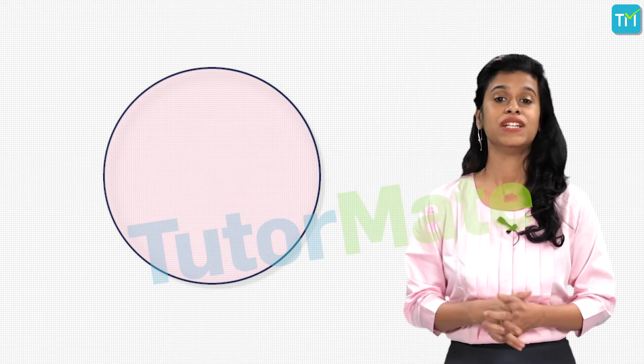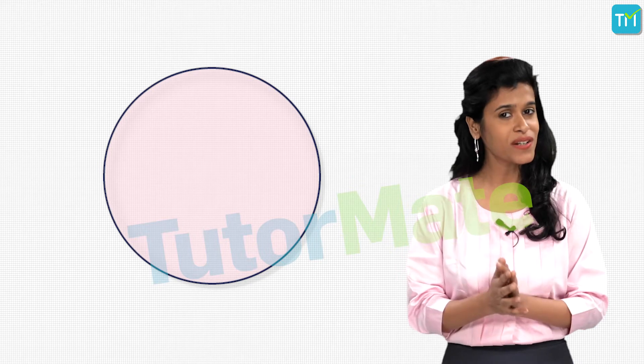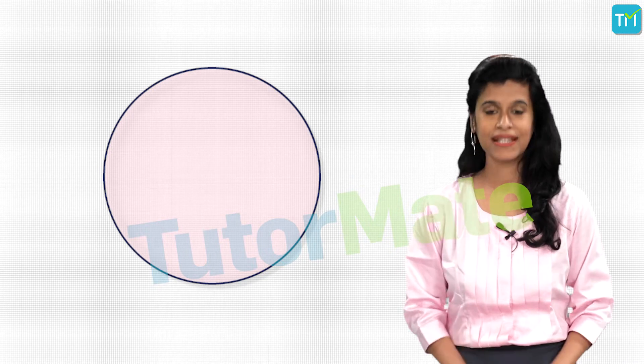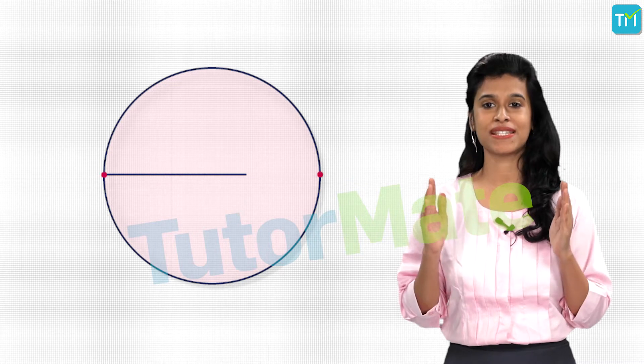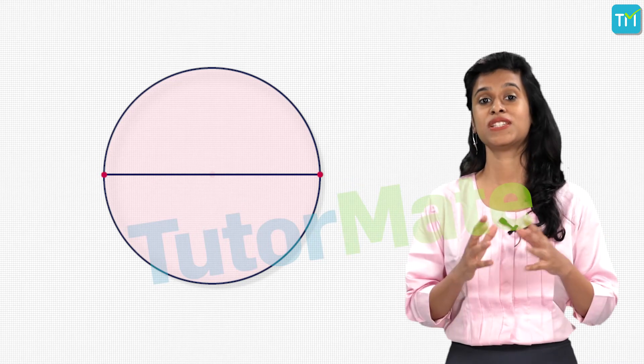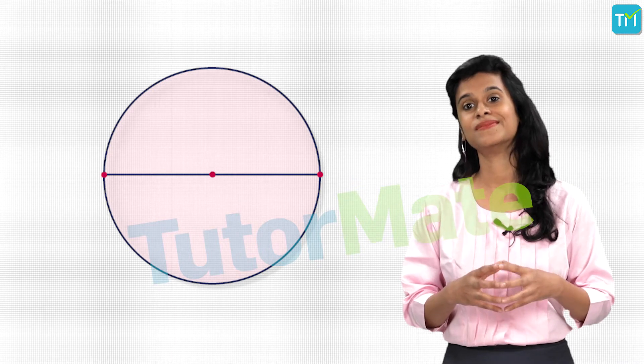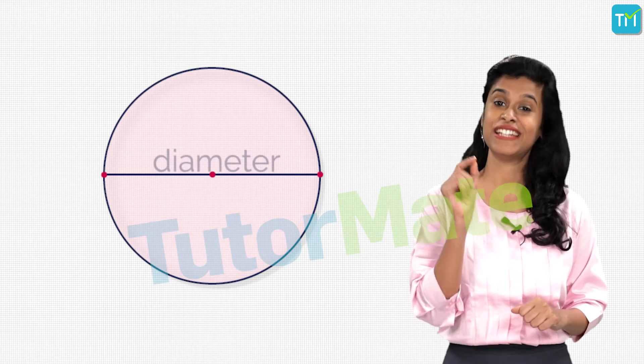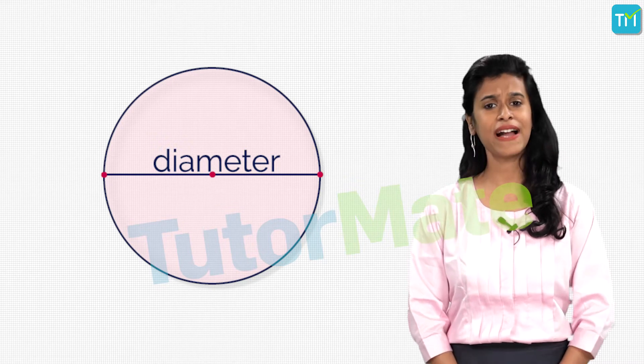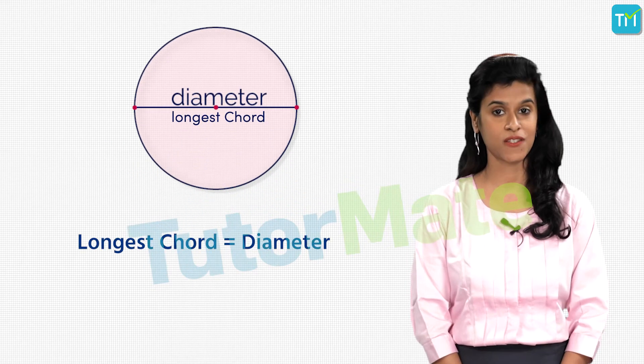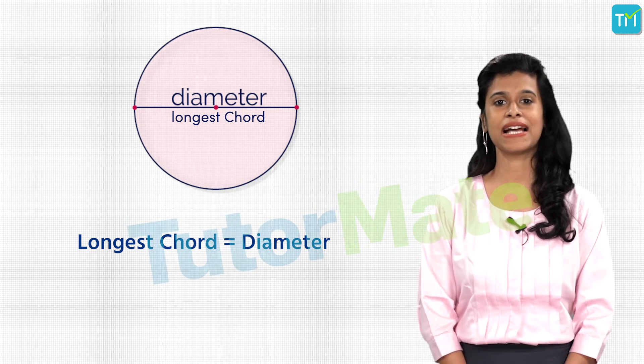Do you know any special chord in the circle? As in, a line segment joining two points on the circle that also passes through the center of the circle? That's right, it's the diameter, which is also the chord of the circle. In fact, it is the longest chord of the circle. And since the circle has infinite points on it, it can have infinite chords and infinite diameters as well.